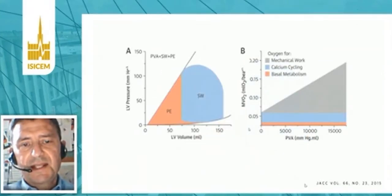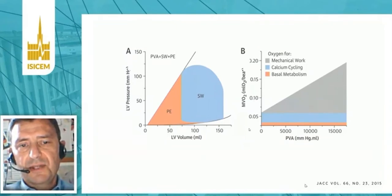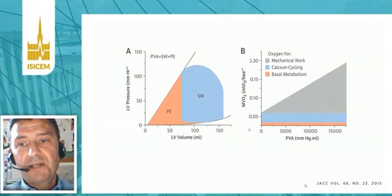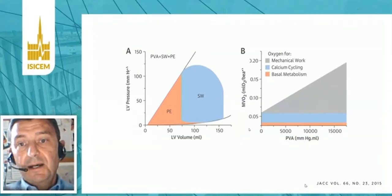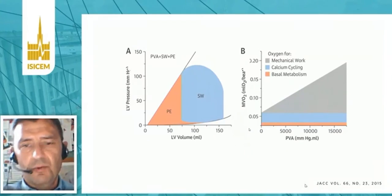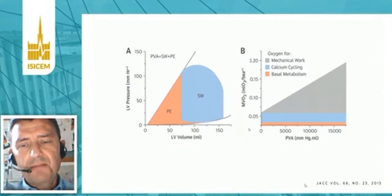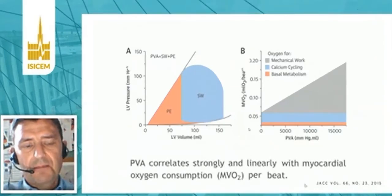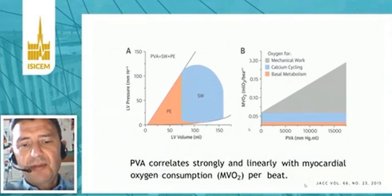What is very important is that the P-V area is strongly related to myocardial oxygen consumption. Within the cardiovascular system, oxygen is used for basal metabolism — mainly related to the potential energy — for calcium cycling, and a large part is used to produce mechanical work. There is a strong and linear correlation between the P-V area and myocardial oxygen consumption per beat.